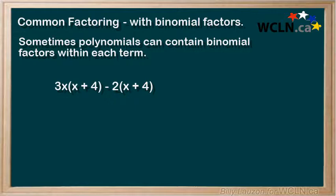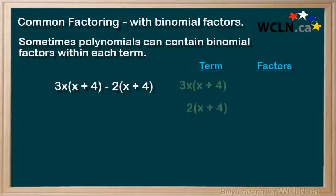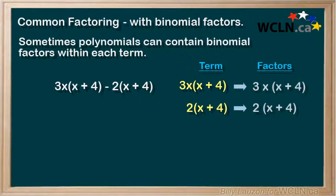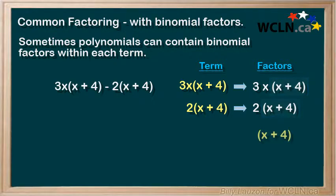Your reflex might be to distribute the 3x and the negative 2, but let's not do that. Let's take each term on the right-hand side and break it apart into its factors, leaving the x plus 4 as its own factor. When we do this, we can see that x plus 4 is in fact a common factor for both terms.